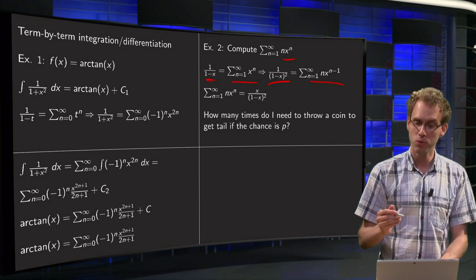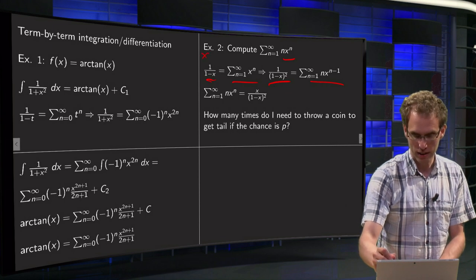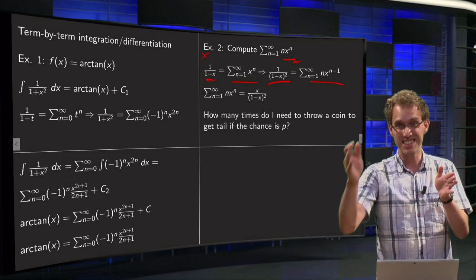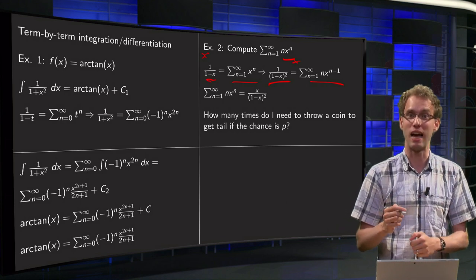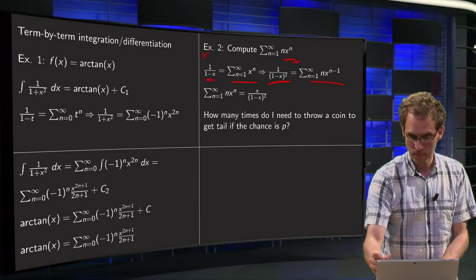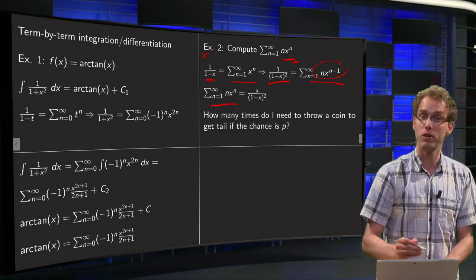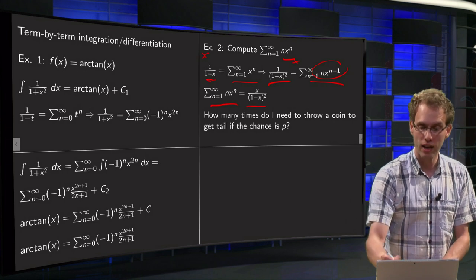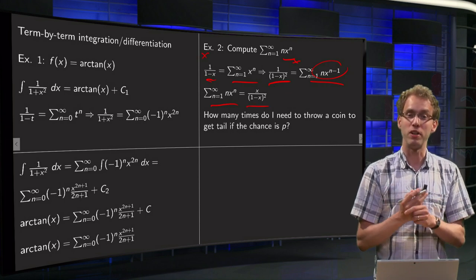So then you multiply both sides by x. That is possible because you can take the x inside the summation sign since it does not depend on n. So then on the left you get n times x to the power n, which is what we were looking for, and on the right hand side you get x divided by (1 minus x) squared.